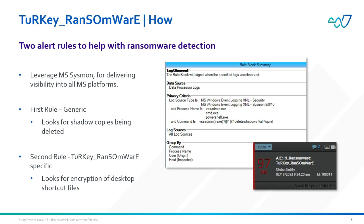The alert rules created focus on two different approaches. The first is relatively simple, and is designed to detect any executions via PowerShell, CMD, or VSS Admin deleting shadow copies. This is a relatively common principle used in effective ransomware variants, and so should act as an early warning sign for potential outbreaks.